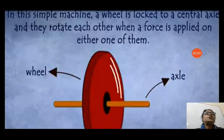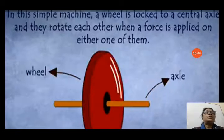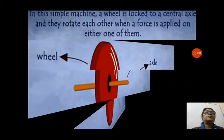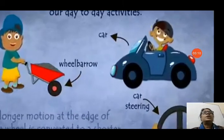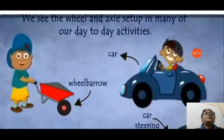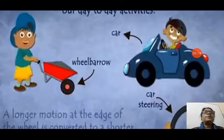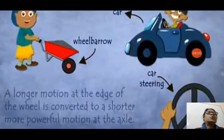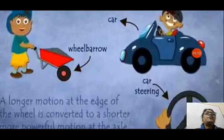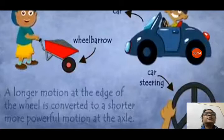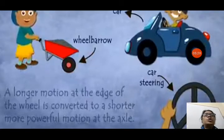When a force is applied on either the wheel or the axle, both will move. A longer motion at the edge of the wheel is converted to a shorter, more powerful motion at the axle.